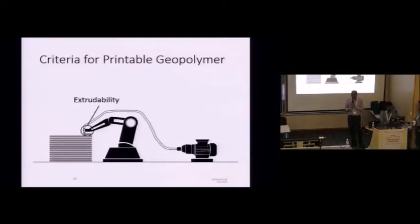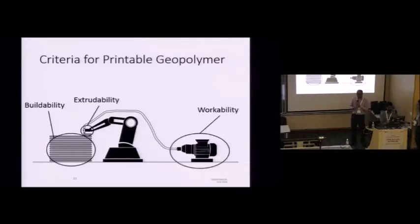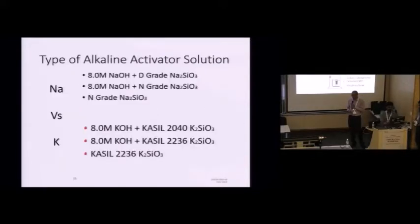So, what are the criteria for printable geopolymer? It's the extrudability, buildability. That's the ability for the layers to stay while it's still building many layers. And also the workability so we can push the concrete through. And also the open time. So, these are the technology commonly used by the papers published in this field. But ultimately, they are all related to yield stress and viscosity and so on and so forth.